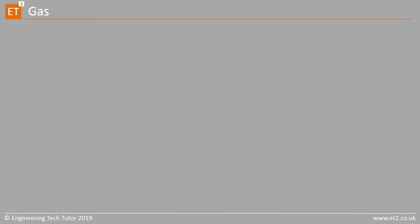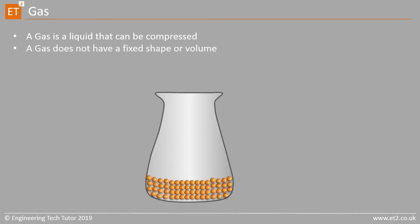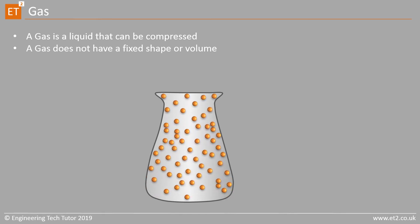Our final state is gas. A gas is a state that can be compressed. A gas does not have a fixed shape or volume. As a liquid warms up and turns into a gas, it expands and fills up the entire void that it's sitting in. It will do that until the whole container is full. If there was not a lid on the container, the gas would escape into the atmosphere and be entirely lost.